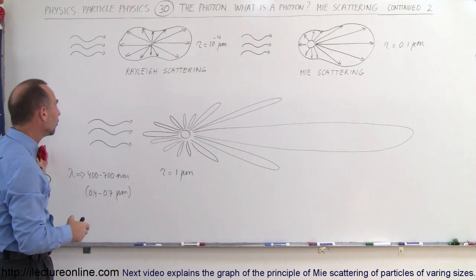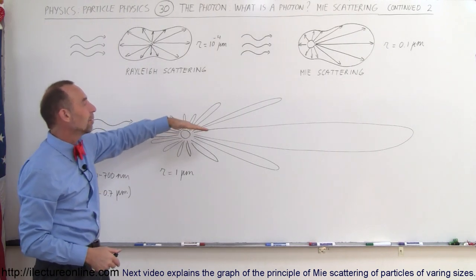So when the particles become larger than the wavelengths of the photons coming in, then we have a very pronounced what we call Mie scattering.